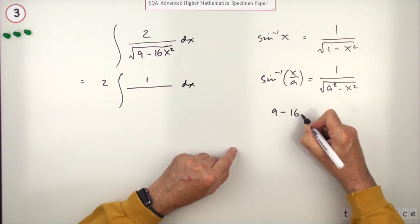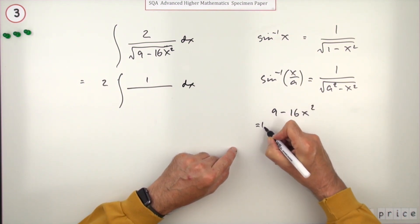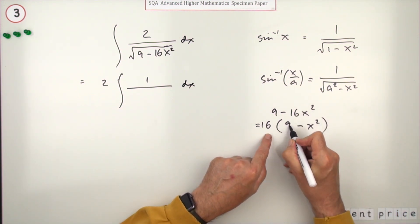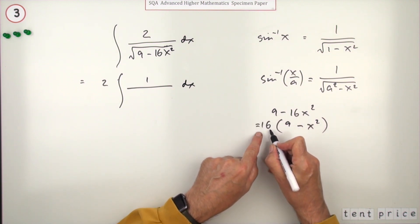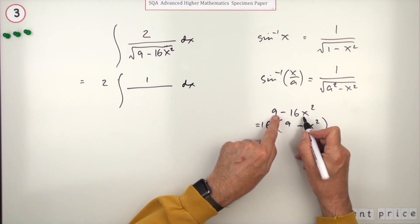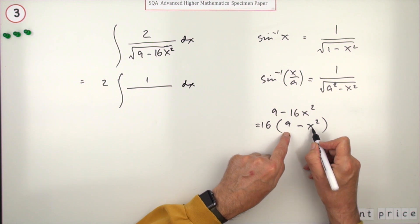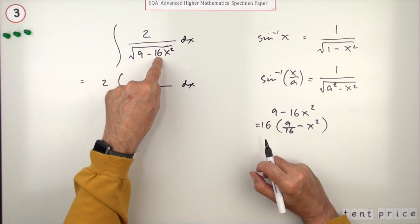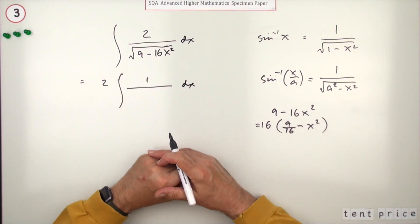If you've got 9 minus 16x squared, you could take the 16 out of that, even though it's not a common factor. That would just leave x squared, but when you take 16 out as a factor, everything has been divided by 16, so that goes down to that and that goes down to 9/16ths.